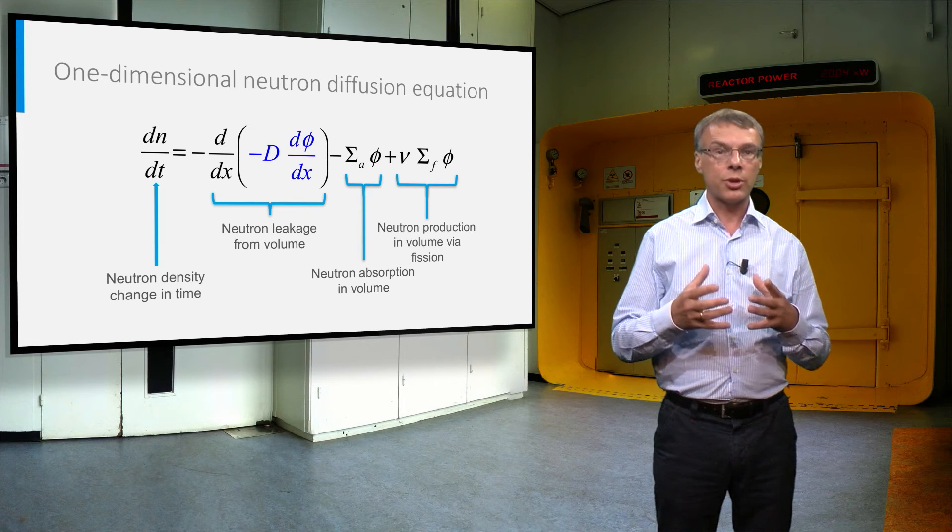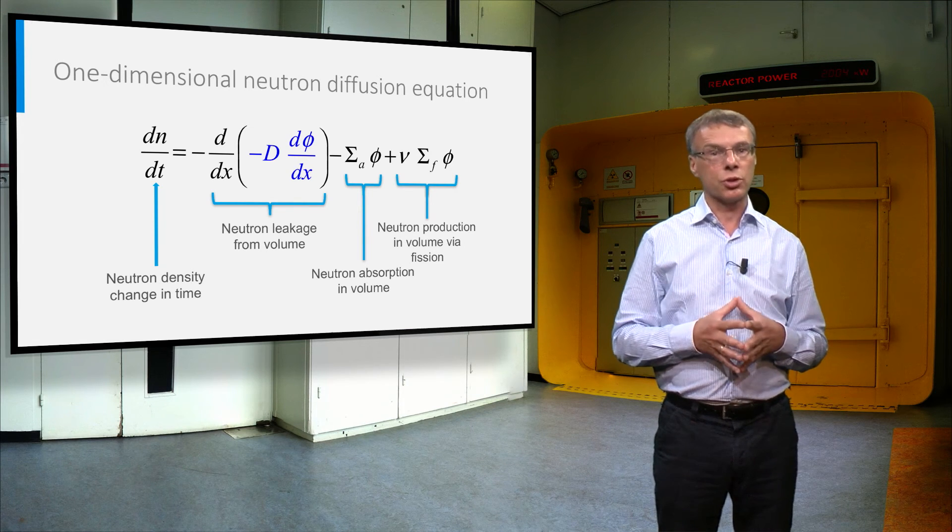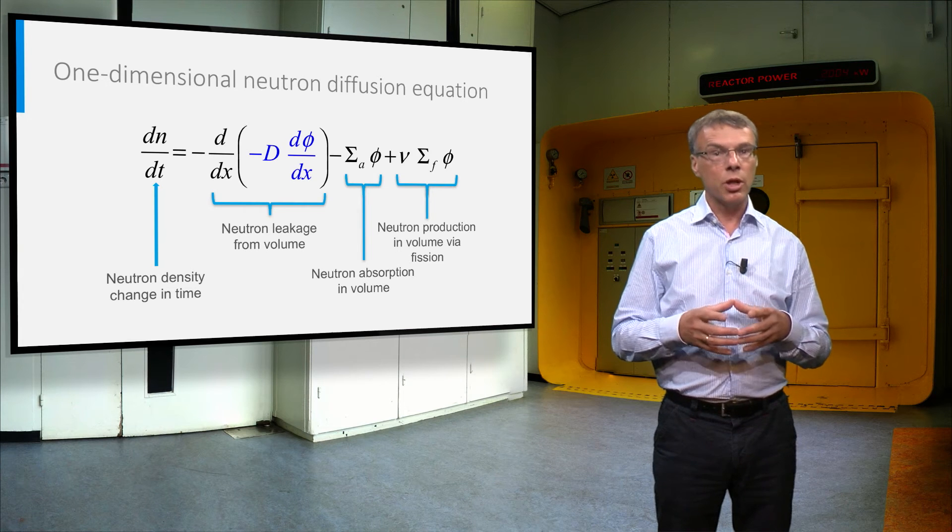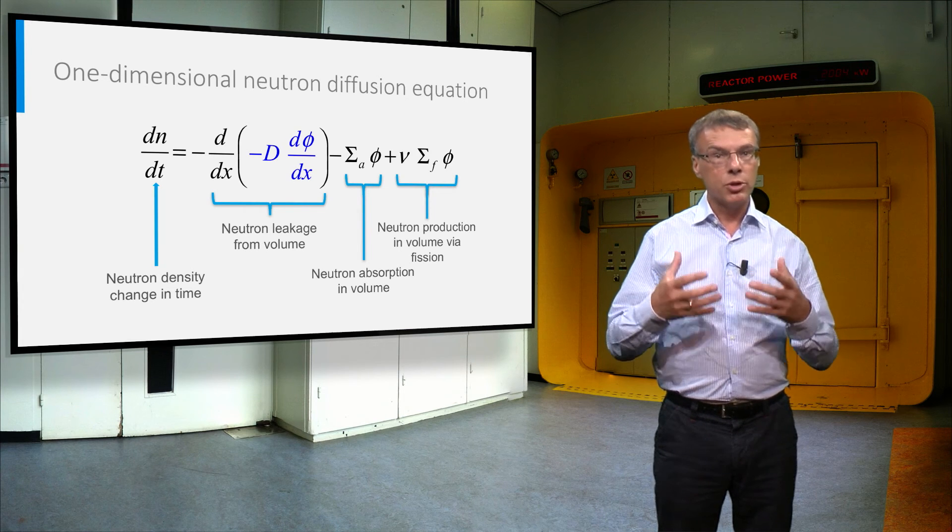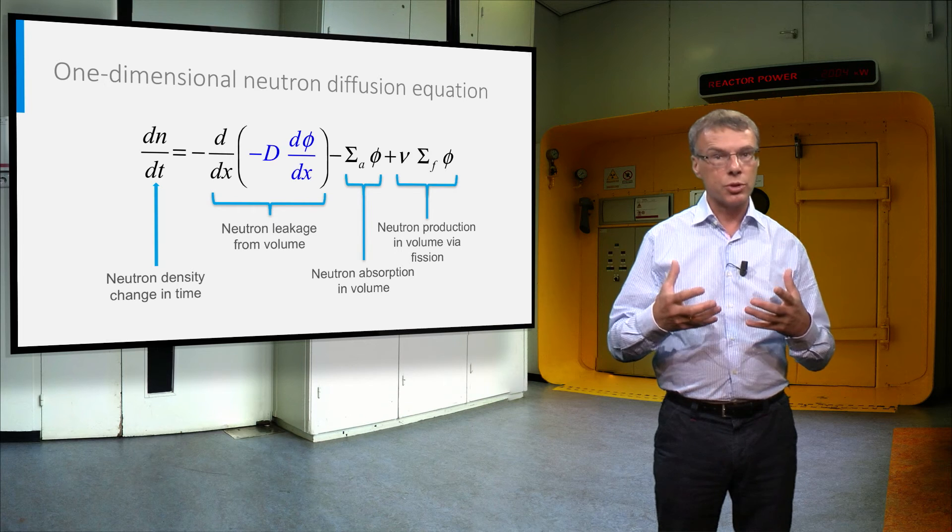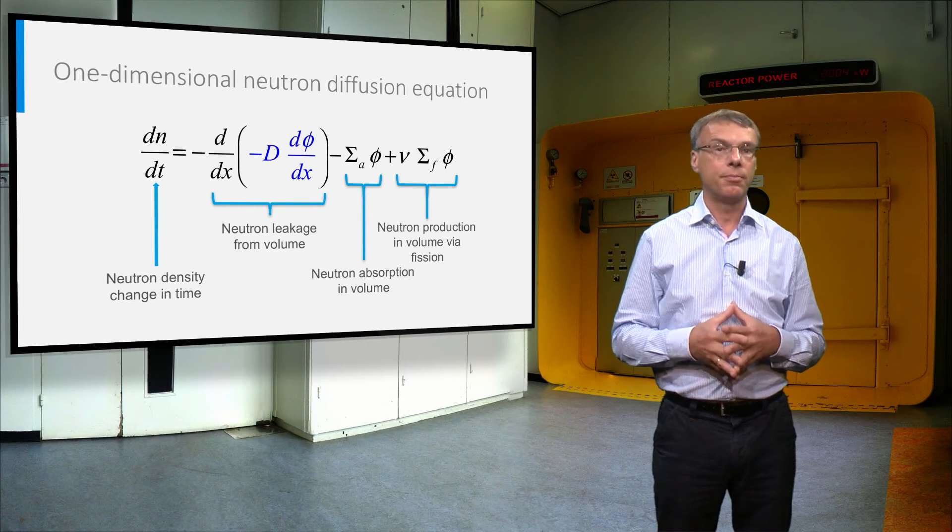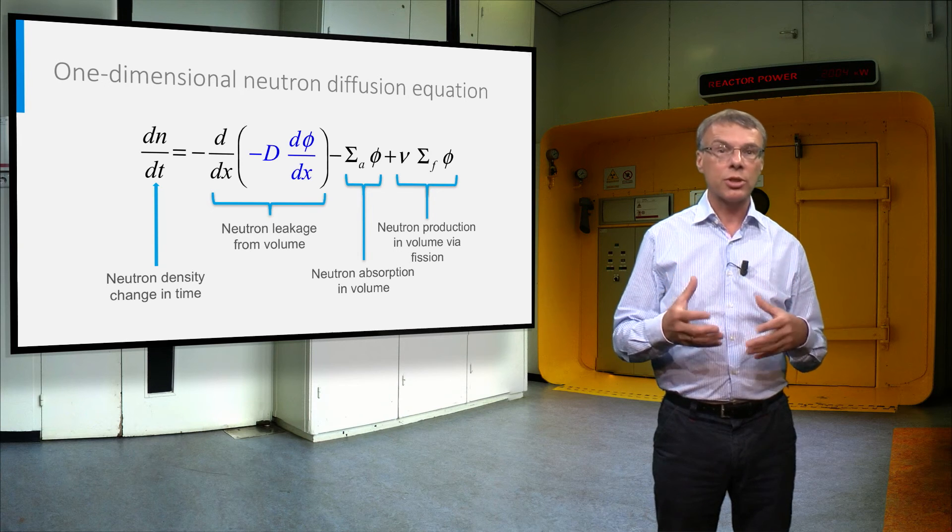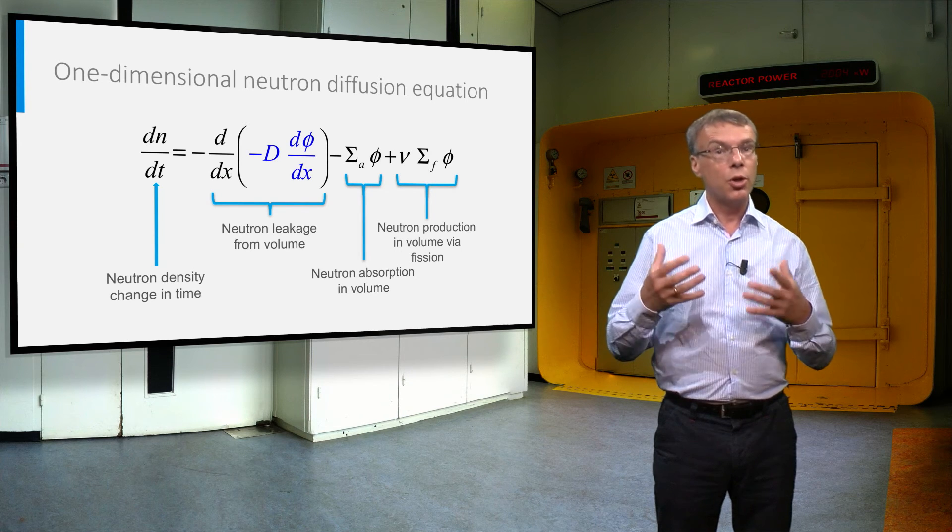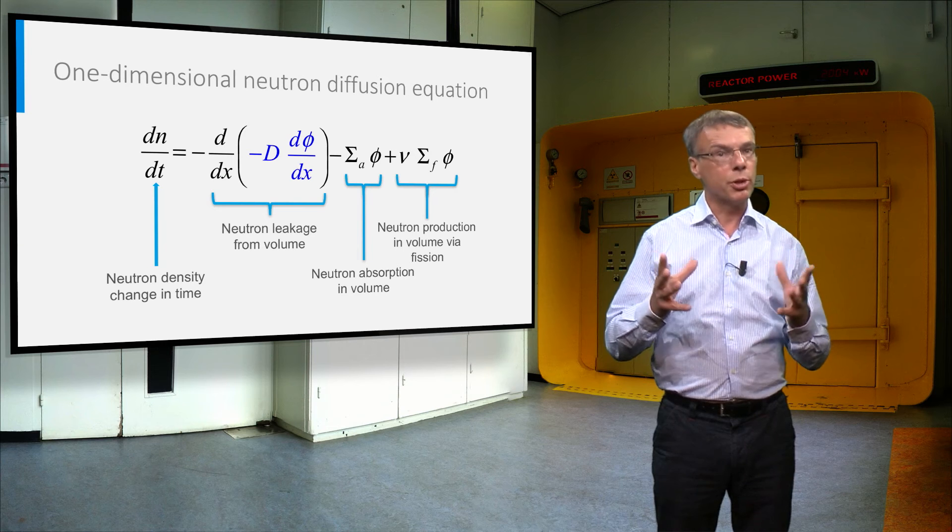And the third term on the right-hand side is the fission neutron source term. This is equal to the fission rate density multiplied by the average number of neutrons released in a fission event, indicated by nu. For most reactors using uranium as a fuel, nu has a value of about 2.5.